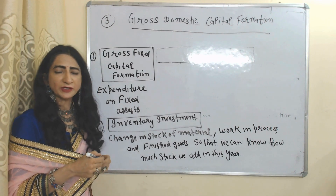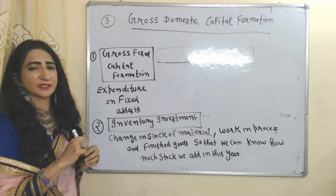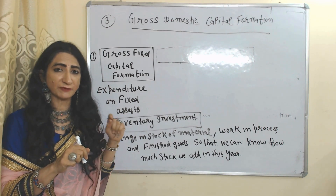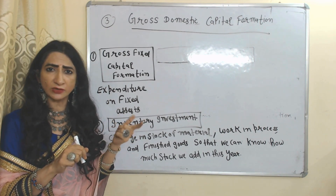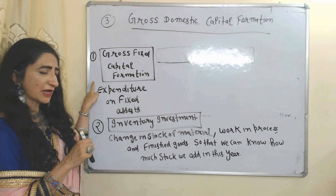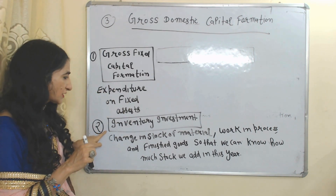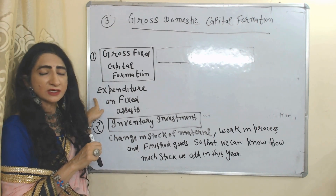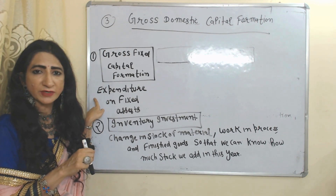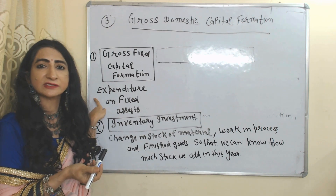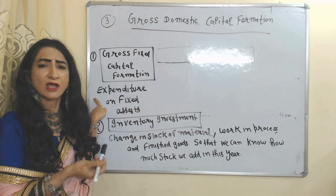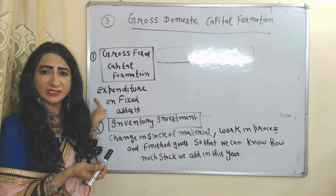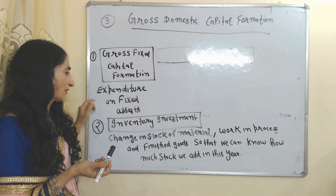The next component is gross domestic capital formation. It includes two things: gross fixed capital formation and inventory management. Gross fixed capital formation means expenditure on fixed assets — for example, expenditure on tools, buildings, equipment, machinery, etc.